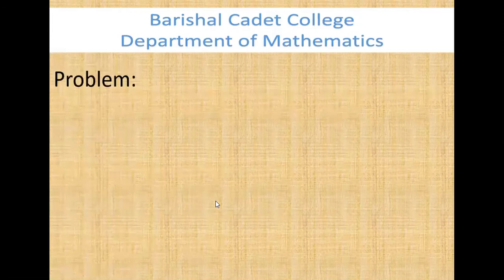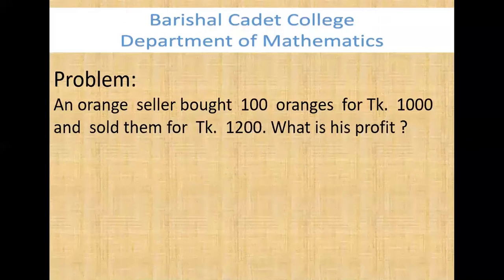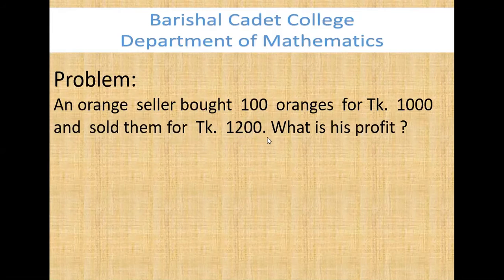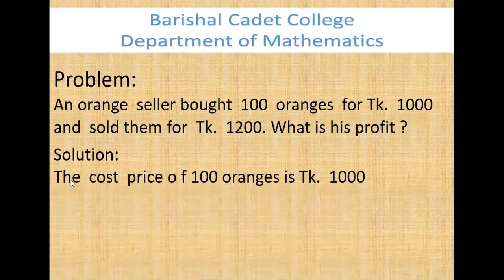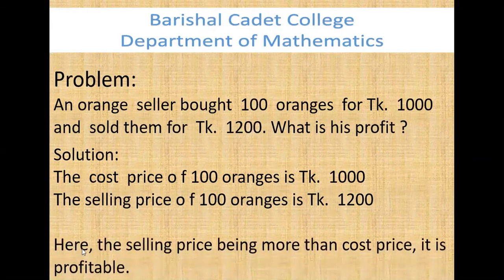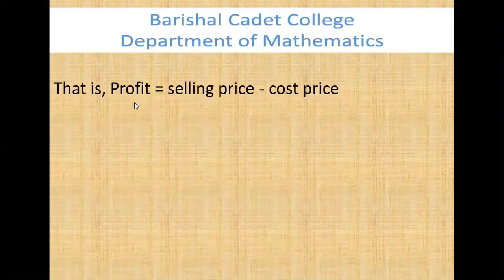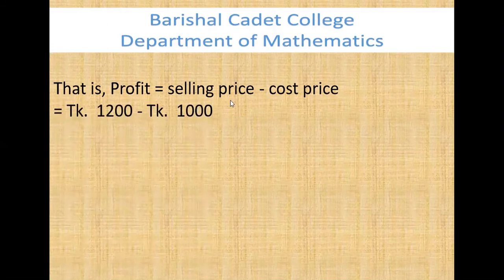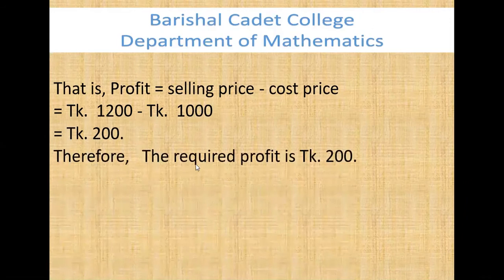We will solve some problems. Problem 1: A shopkeeper bought 1 kg of apples for taka 100 and sold it for taka 120 per kg. How much profit did he get? Cost price = taka 100, selling price = taka 120. Profit = selling price minus cost price = 120 minus 100 = taka 20. Problem 2: An orange seller bought 100 oranges for taka 1000 and sold them for taka 1200. Since selling price is more than cost price, profit = 1200 minus 1000 = taka 200.